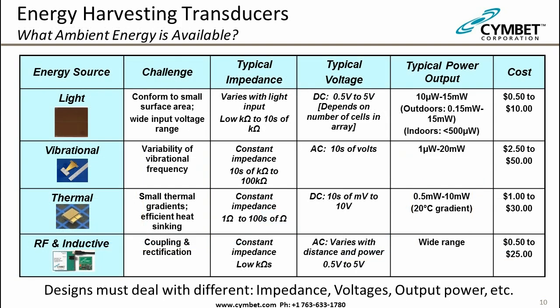This chart shows the various energy harvesting transducers we can use: light, vibration or motion, thermal gradients via thermoelectric generators, and RF or inductive harvesting. Each has unique challenges. Some produce DC voltage, others AC. A key distinction is impedance: solar cells are variable impedance, while others are constant impedance, and this drives different power curves. Your conversion circuits must account for this. Output power ranges from just a microwatt to many milliwatts, so your circuit design must handle that wide range.